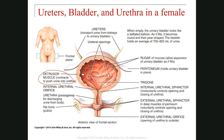When the urinary bladder and urethra attach together, between them we have the orifice, which we call the internal urethral orifice. This orifice is protected by a sphincter called the internal urethral sphincter, which controls the opening and closing of the urethra out of our control — it is involuntary.